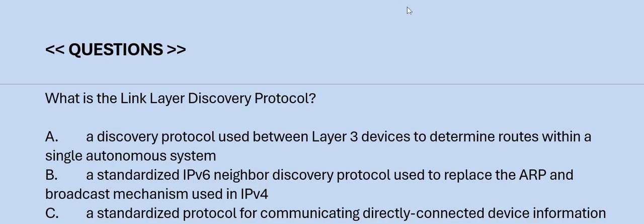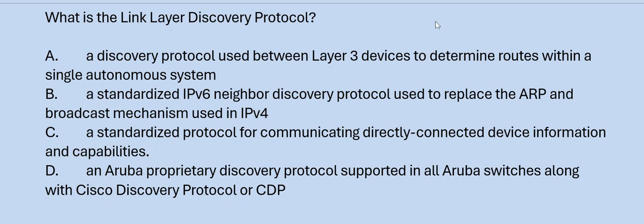Next question: What is the link layer discovery protocol? Option A: a discovery protocol used when there are 3 devices to determine routes within a single autonomous system. Option B: a standardized IPv6 neighbor discovery protocol used to replace ARP within a single system. The correct answer is Option C.